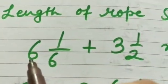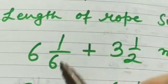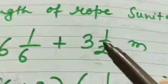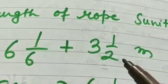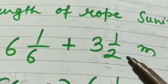Now you will see here 6 is the whole number and 1/6 is the fractional part. In the second one also, 3 is the whole number and 1/2 is the fractional part.